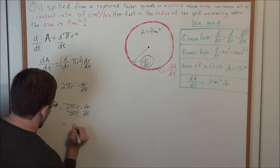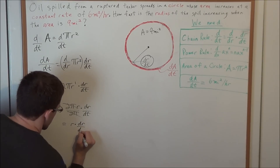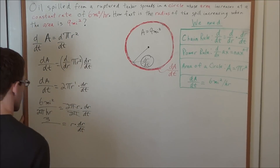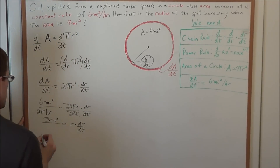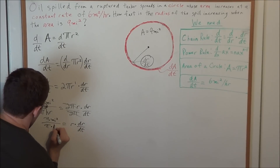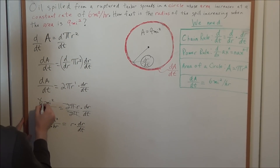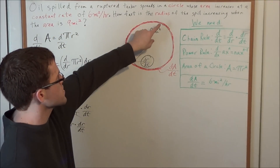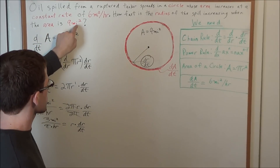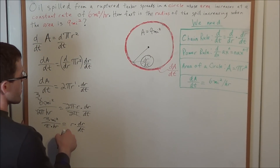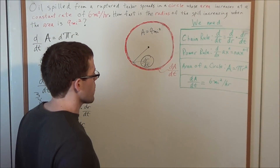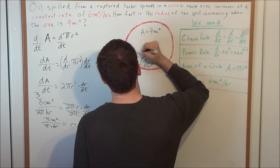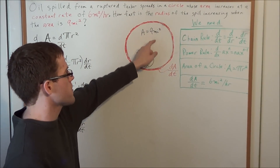On the right-hand side we have r · dr/dt, and on the left we have 6 divided by 2π, which gives us 3 miles squared over π times hours. The 2 cancelled with the 6 to give us 3. Now, they asked for the radius when the area is 9 miles squared, so we need a specific value of r.